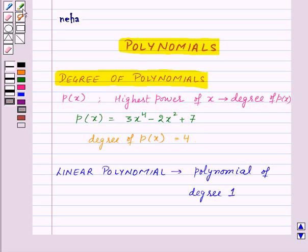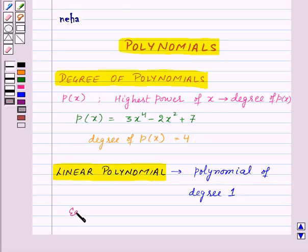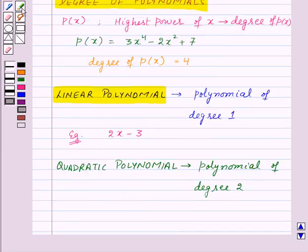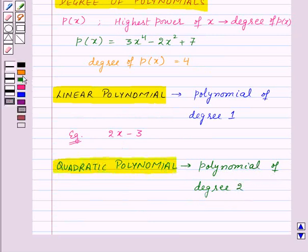Now, a linear polynomial is a polynomial of degree 1. An example of a linear polynomial is 2X minus 3. A quadratic polynomial is a polynomial of degree 2. One example of a quadratic polynomial is 2X squared plus 5X minus 3 upon 5.